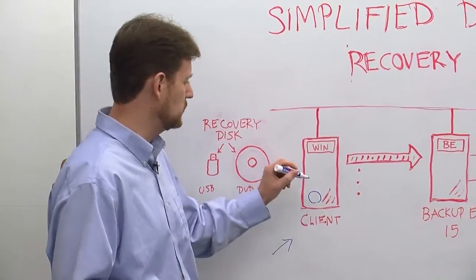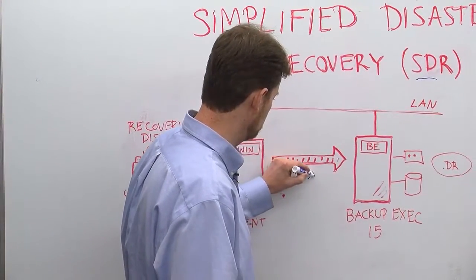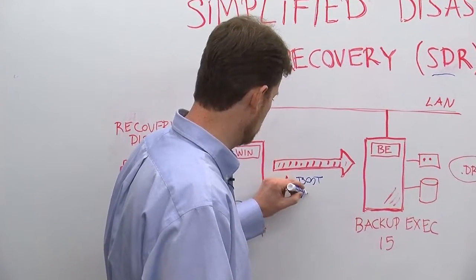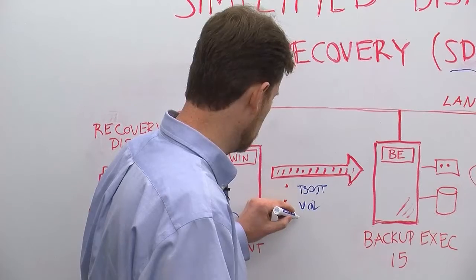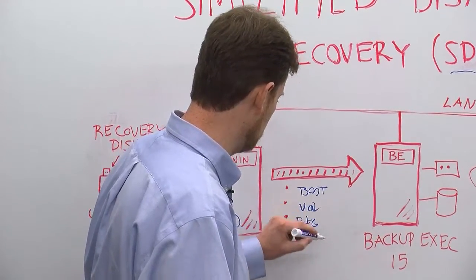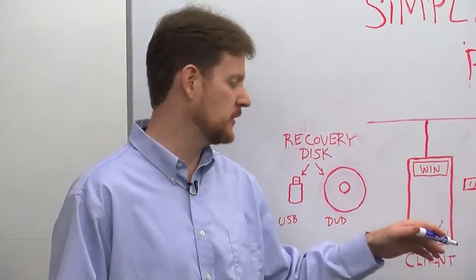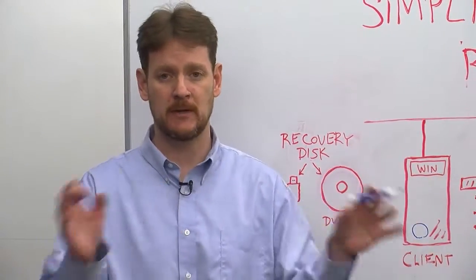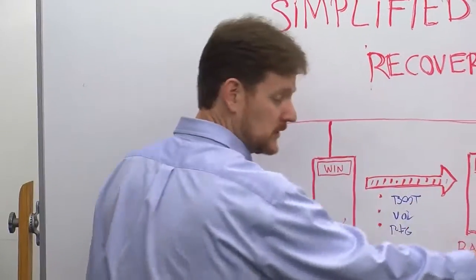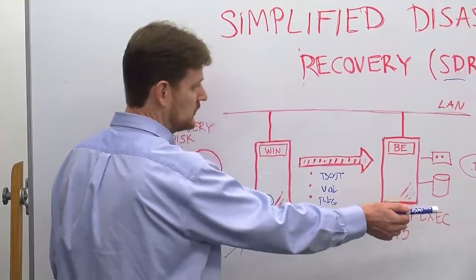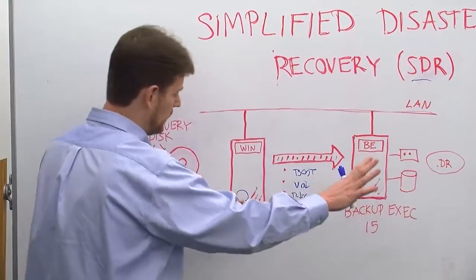this will also include key things such as boot information, basic volume configuration information, and the registry, just as some examples. It includes key things required to rebuild this machine from scratch in an automated fashion. This backup stream can be stored at any standard disk location or deduplication disk location. It requires a .dr file and that's all built in and automatic.